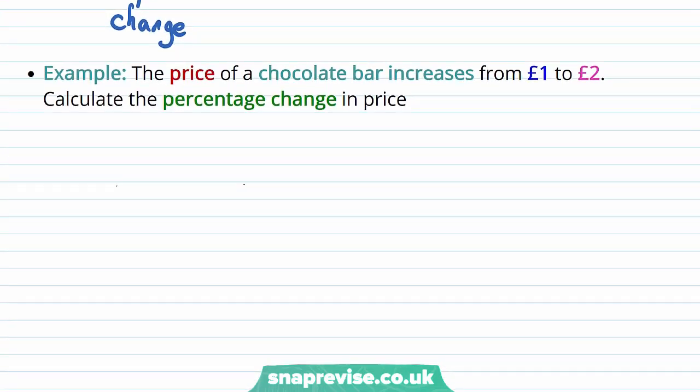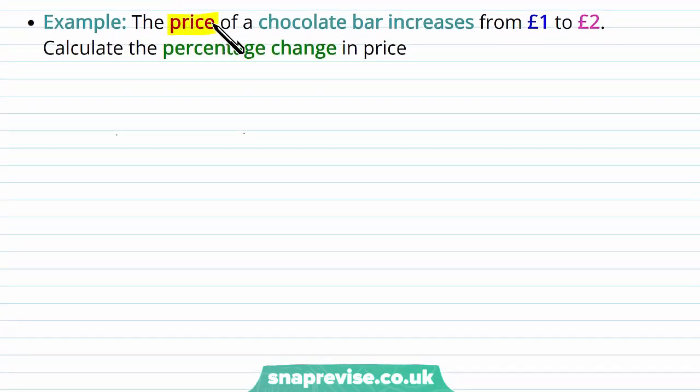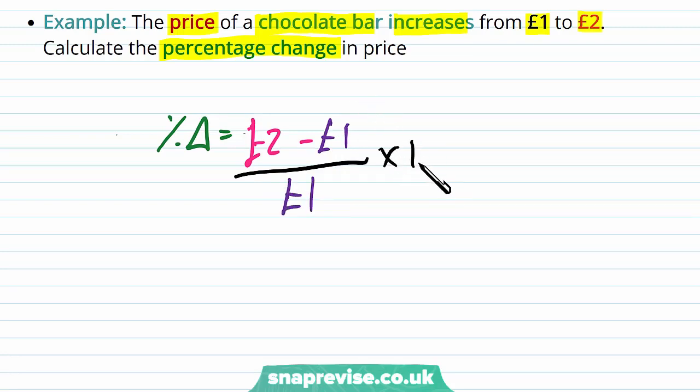Let's work through another example for how to calculate the percentage change. The price of a chocolate bar increases from £1 to £2. What is the percentage change? Percentage delta is equal to £2 minus £1 all divided by £1 times by 100. This initial fraction is going to be equal to 1 over 1 times that by 100 is equal to 100%. It's a very straightforward calculation, but make sure when you're calculating PED, do not use your raw unit. Do this percentage change method to make sure you're doing it correctly, because PED is percentage change.